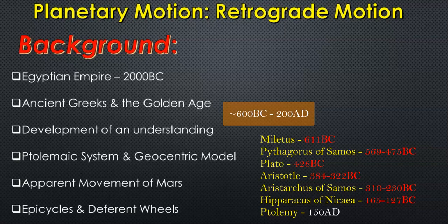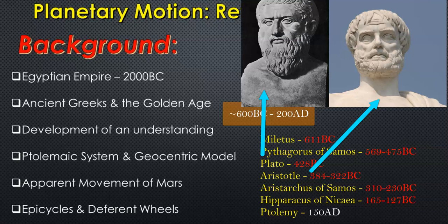Then you have Aristotle, around 384 BC, looking at the uniform circular motion of planets and discussing retrograde motion as a way to explain how the planets moved. Plato came around 420 BC, and Aristotle was one of his students. Plato was also discussing the heavens — that planets had a circular motion.